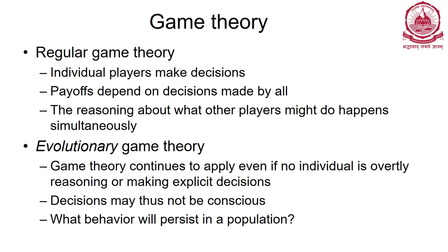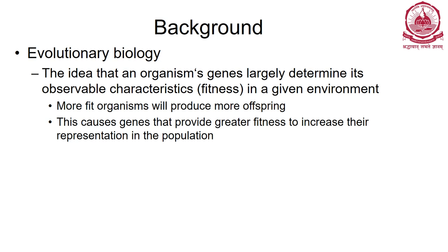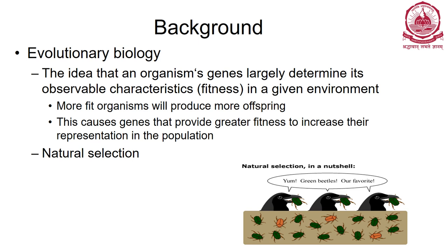Given that genes decide strategy, what will persist in a population of different genes is essentially what evolutionary games analyze. The background is primarily from evolutionary biology: an organism's genes largely determine its observable characteristics, also called fitness. Organisms which are more fit will produce more offspring and have larger representation in the population - this is natural selection.